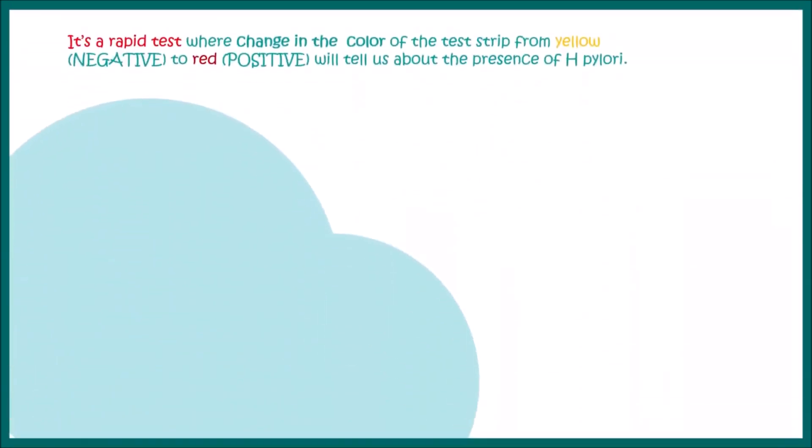In this video, we'll try to understand how this test really works. It's a rapid urease test, meaning it's simple and rapid, and the decision is made by color change. It's pretty much visual.